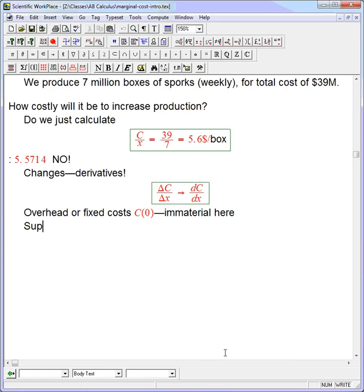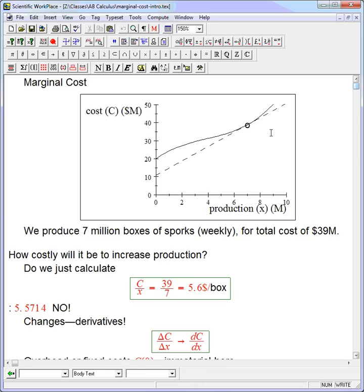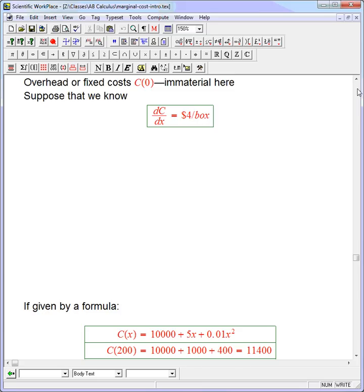So suppose that we know somebody gave to us, calculated, modeled, whatever—they told us dC/dx is $4 per box. And that's in fact what's going on here in this picture. The slope of this line is 4. You can check that if you want to pause the video and see that that slope is 4. So $4 per box is the actual slope of that line, dC/dx.